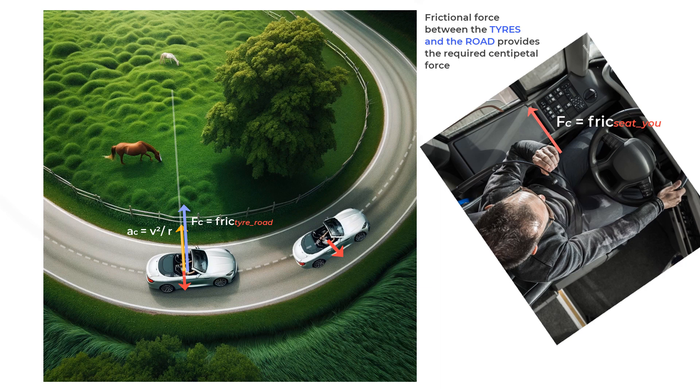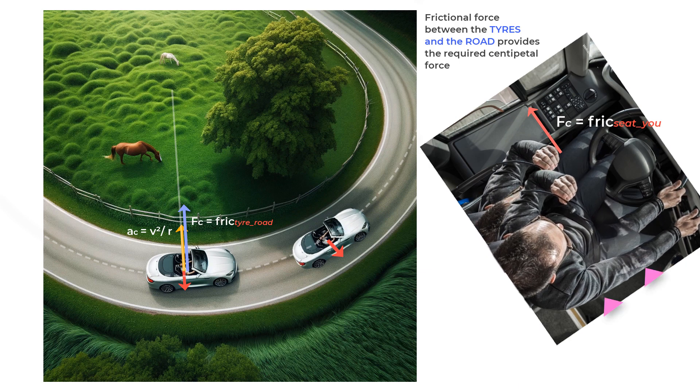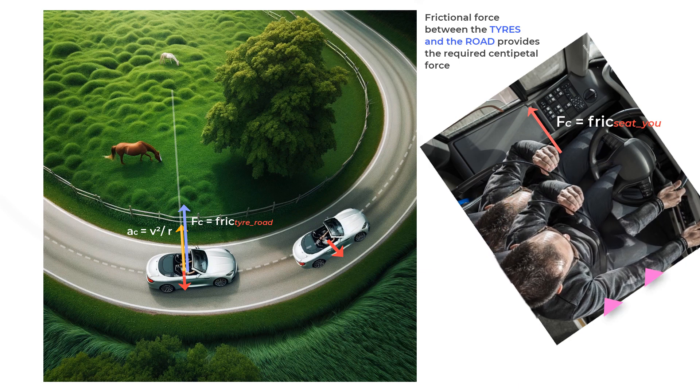So, try to visualize what is happening. The thing is that you actually continued moving straight ahead while the seat slid beneath you until the door of the car jammed into you. And then, its push on you gave you the needed centripetal force and you started moving with the car in uniform circular motion.